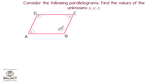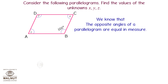Let's try a question based on the opposite angles of a parallelogram. Find the values of the unknown angles X, Y, and Z. In the figure, the measure of angle B is 100 degrees. Since the opposite angles of a parallelogram are equal in measure, angle B equals angle D, so Y equals 100 degrees.